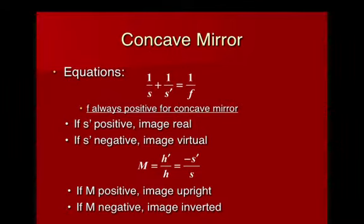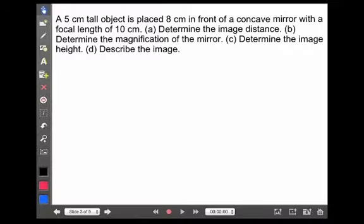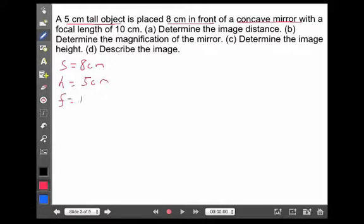Let's look at a couple examples. This problem says we have a 5 centimeter tall object that is placed 8 centimeters in front of a concave mirror — that's important — with a focal length of 10 centimeters. So s is 8 centimeters, h is 5 centimeters, and f is positive 10 centimeters because it's a concave mirror. Those are the rules.